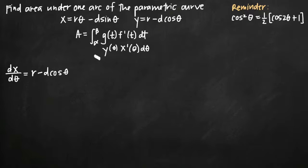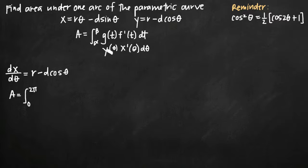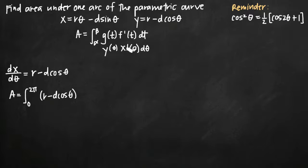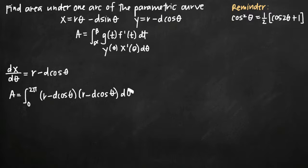Now that we have that, we can go ahead and plug into our area formula. Our limits of integration are almost always going to be 0 and 2 pi. So we have our limits of integration, then y of theta which is r minus d cosine theta, then x prime of theta — the derivative of x with respect to theta — which is also r minus d cosine theta, and then d theta.